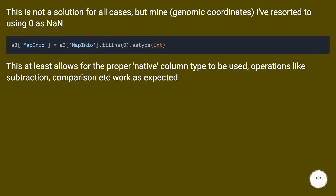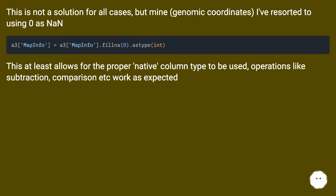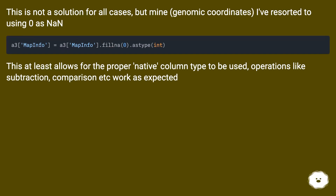This is not a solution for all cases, but for mine — genomic coordinates — I've resorted to using 0 as NaN. This at least allows for the proper native column type to be used; operations like subtraction, comparison, etc. work as expected.